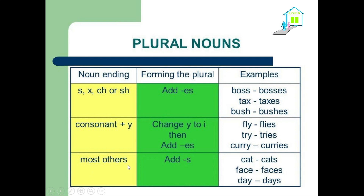Most other nouns — we add just S for the plural form. Like cat → cats, face → faces, day → days. And here we have an exception: when we have a Y but just add S. Why haven't we omitted the Y here? Because here we have a vowel — A is a vowel. But L, R, R are consonants. When we have a consonant, we change it to I. When we have a vowel, we don't change it — we just add S at the end.